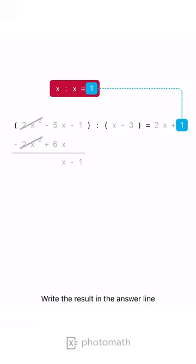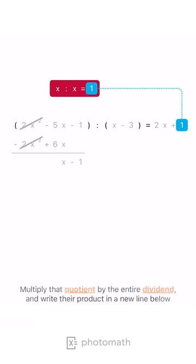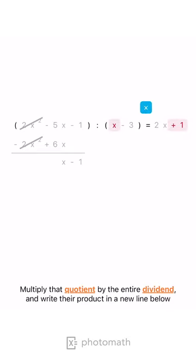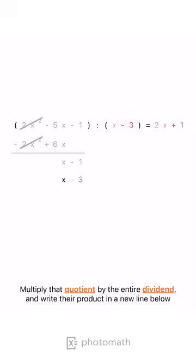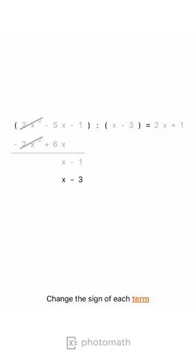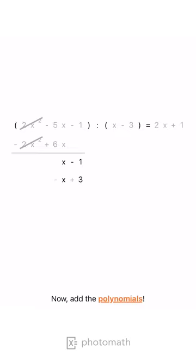Multiply that quotient by the entire dividend, and write their product in a new line below, change the sign of each term, now add the polynomials.